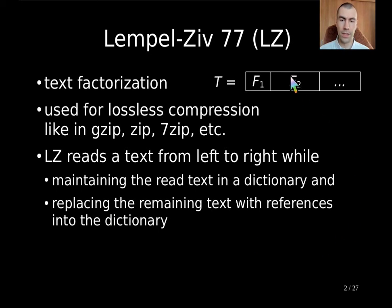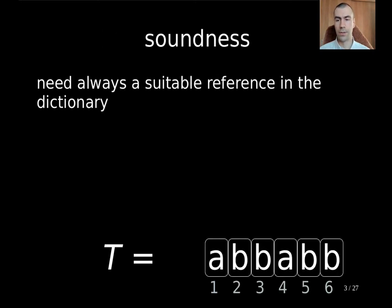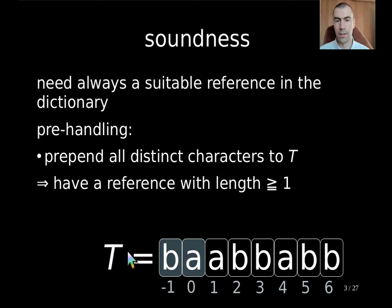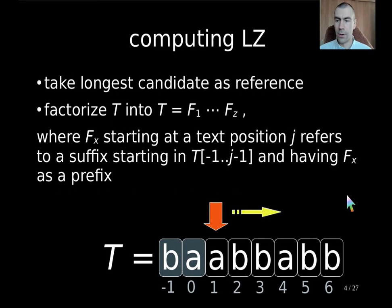In our variant we want that each factor has a reference. So we need to preprocess our dictionary to have suitable references. Here the idea is that given, for instance, this example string, we prepend all distinct characters appearing in the text to the text. In this case the text is binary, so we have just prepended two characters. By doing this preprocessing we guarantee the property that each reference has a length of at least one. So what does actually LZ do?